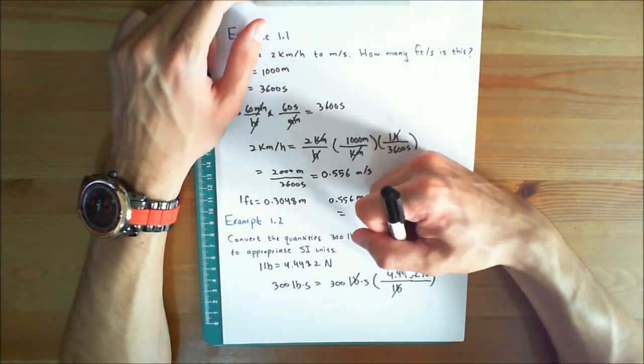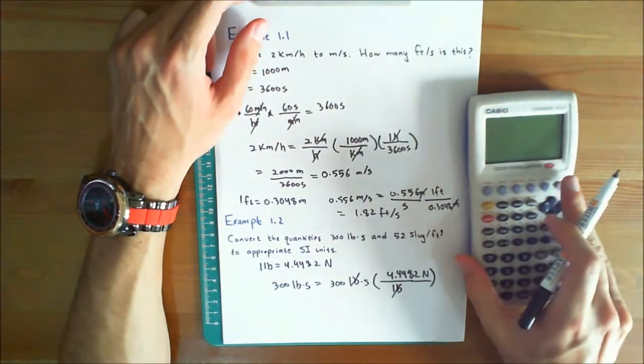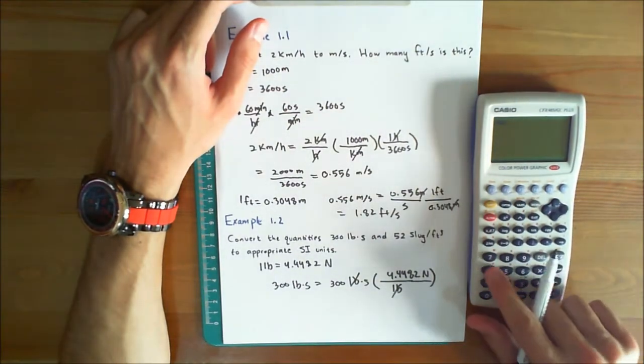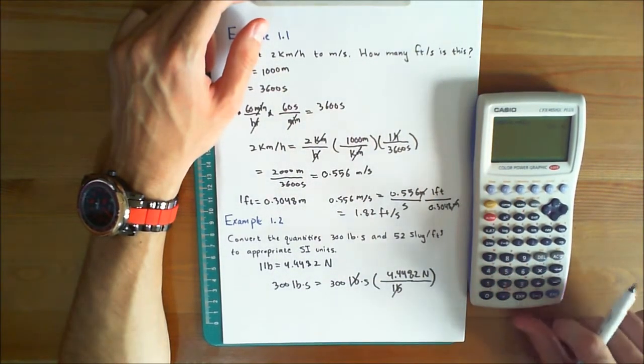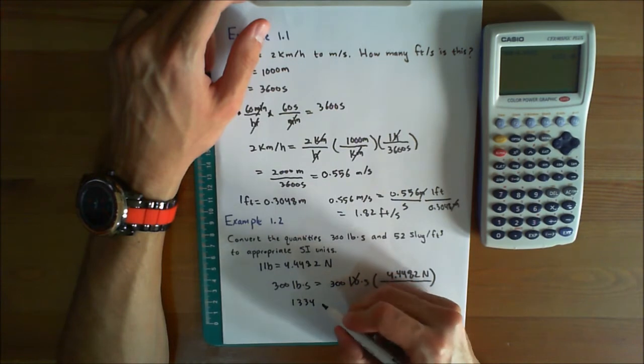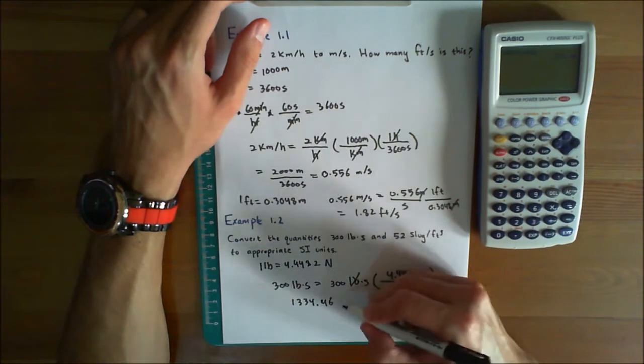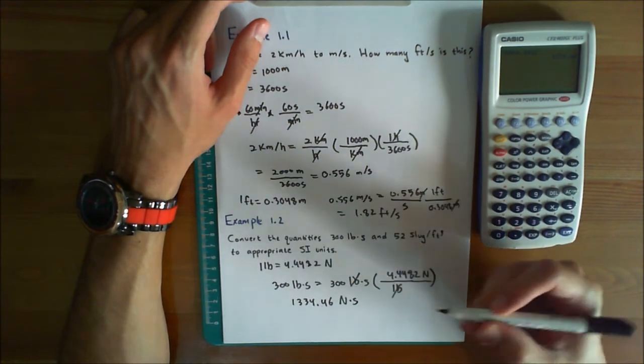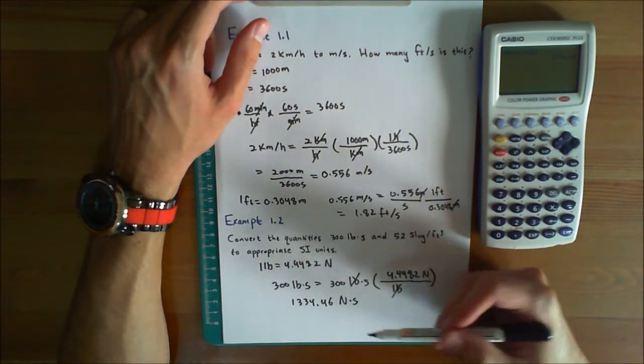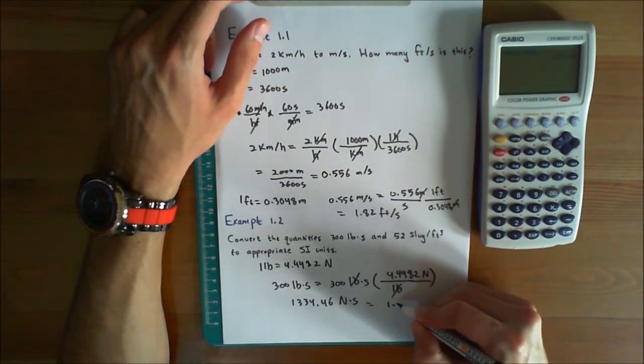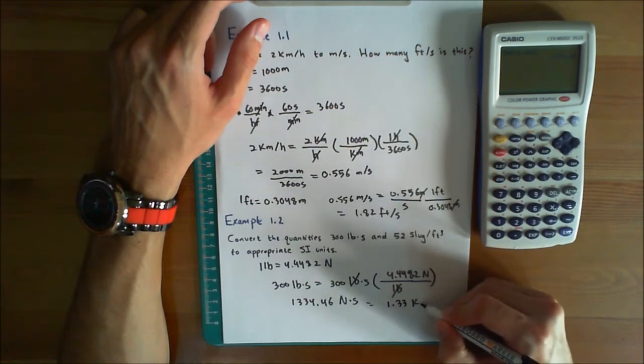This would give you 300 times 4.4482. And the answer to that would be 300 times 4.4482, 1,334.46 newtons. Now you must round this to 3 significant figures. And in order to do that, this would give you 1.33 kilo newton second.